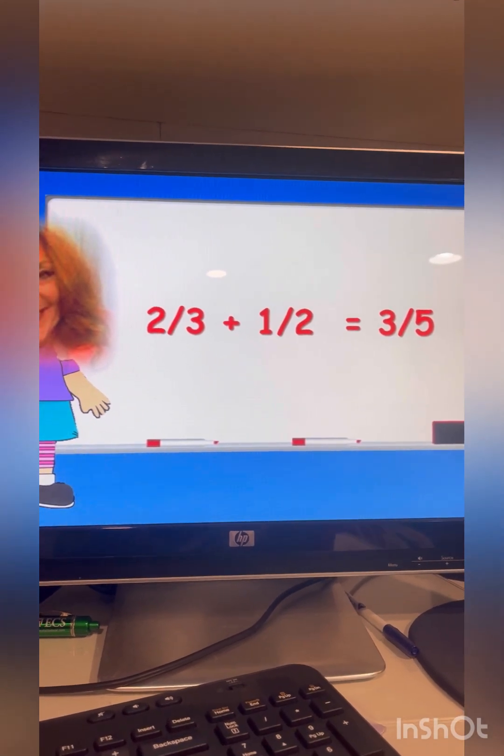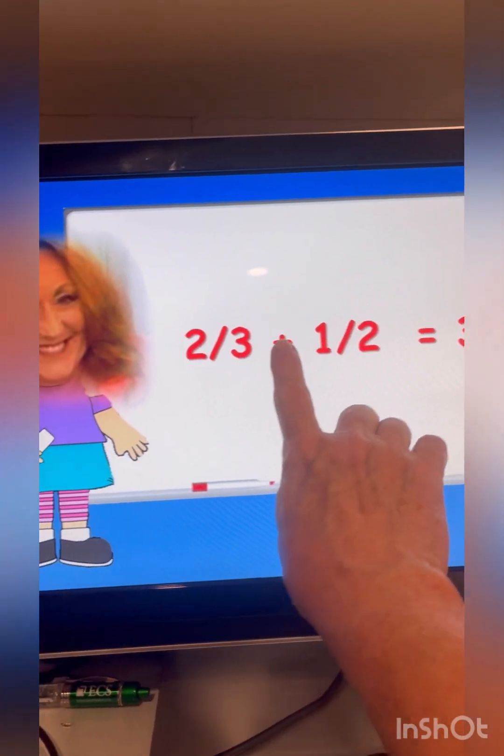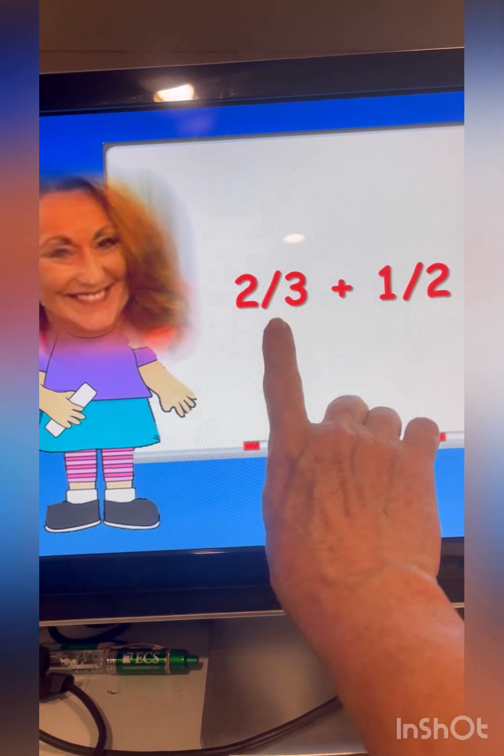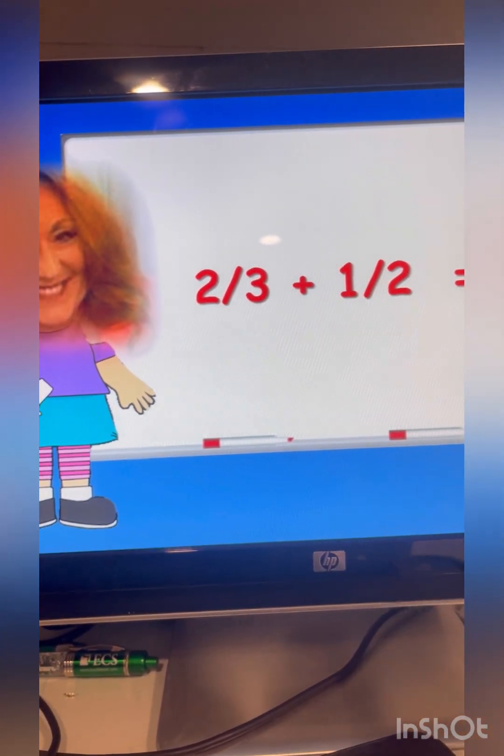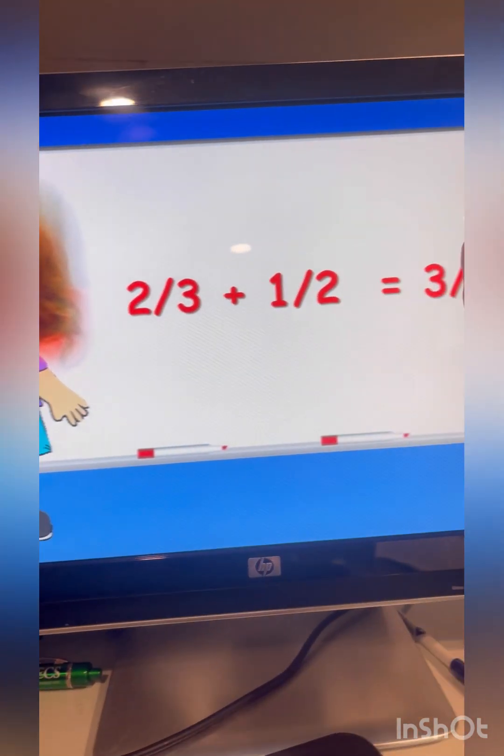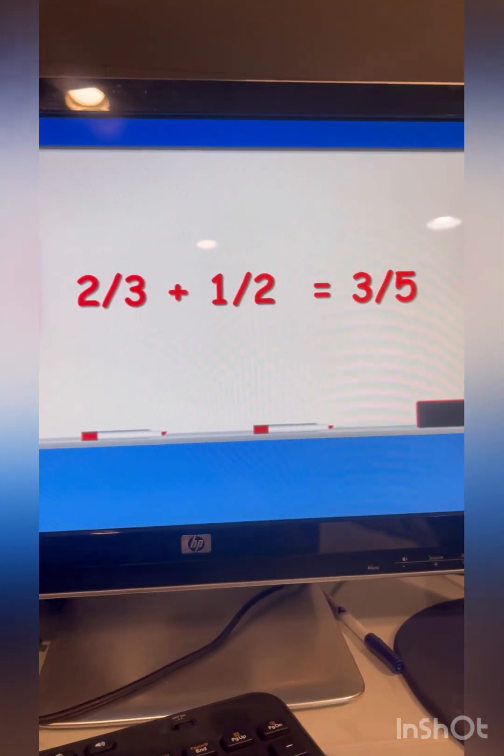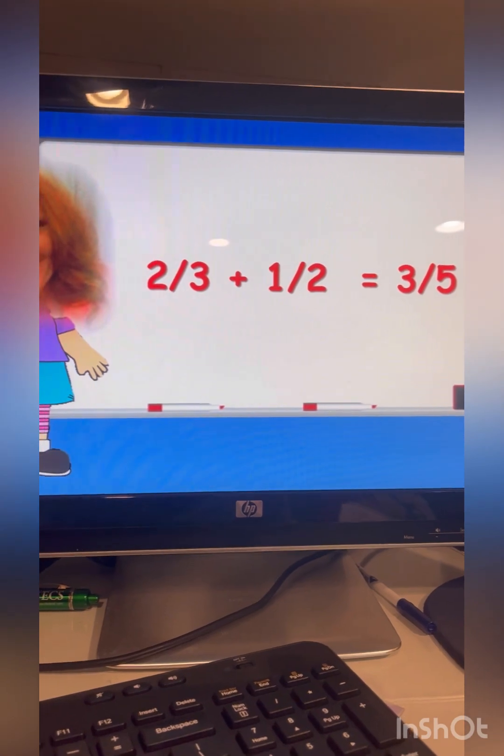What happened with this particular problem? We saw this add sign here, and our students went three plus two equals five, two plus one equals three-fifths. Well, we know that that is not right.